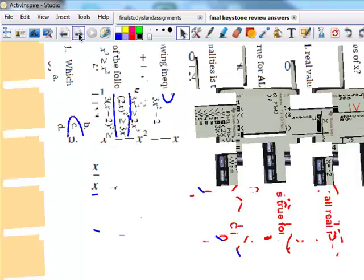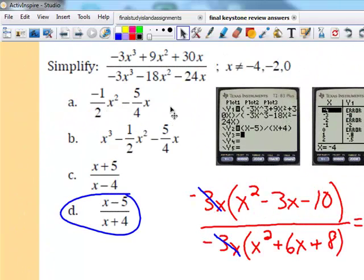Next question. Here's a hard factoring problem where you're supposed to simplify by factoring. We can only cancel all factors, not terms. We talked about this. We see that these numbers, please don't allow these numbers to distract you. These are the exceptions to the domain.